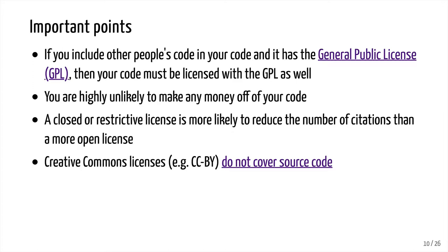A common license for text and other creative materials is the Creative Commons license, sometimes seen as CCBY. This does not cover source code, but many open access papers — like those in mBio — are licensed under CCBY, which means it's a Creative Commons license where BY means by attribution: people can use it to do whatever they want, but they have to say they got the material from you. Because it doesn't cover source code, we could not license Mother or our paper's code using CCBY.